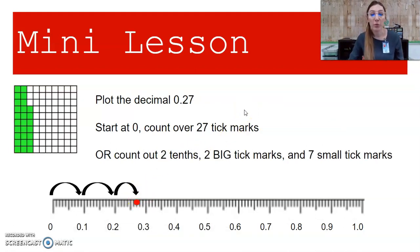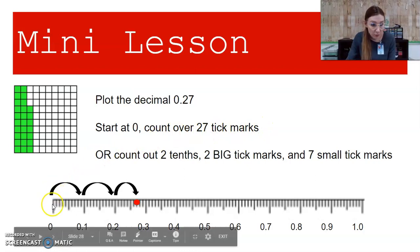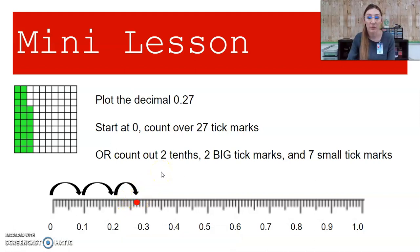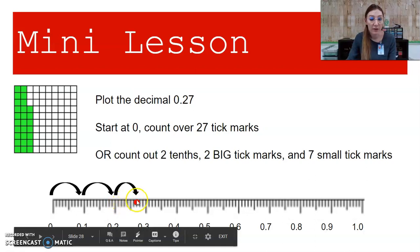Next, let's plot the decimal 0.27. Because I know my decimal place values, I know that 7 is in the hundredths place, so I'm going to need to use a hundredths number line. We start at 0 and count over 27 tick marks. Or, because the large tick marks are tenths, the medium tick marks are fives, and the little tick marks are ones — I could count out 2 tenths, that's 2 big tick marks, or 20 hundredths, then count out 7 small tick marks to land on 27 hundredths.